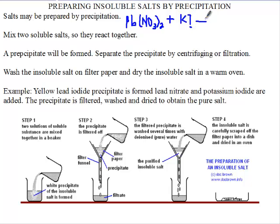Now the lead is going to knock out the potassium. The lead is going to clear the potassium from there, and then we are going to have lead iodide.